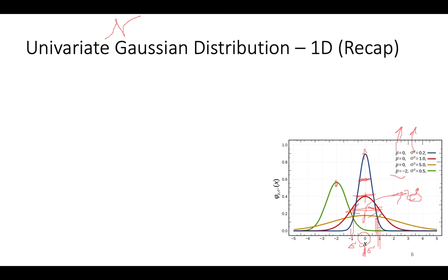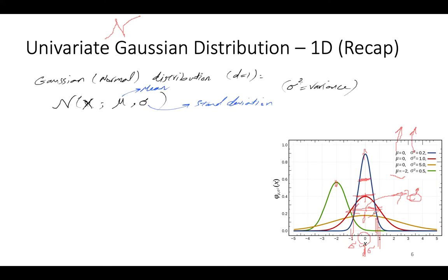We can define a Gaussian or normal distribution in 1D by that N-shaped function of x, where x has two hyperparameters: mean mu and standard deviation sigma. The variance is the square of the standard deviation. The probability is computed as 1 over a normalizing constant — root of 2*pi*sigma squared — times a negative exponential of (x minus mu) squared divided by 2*sigma squared, giving a scalar probability value.